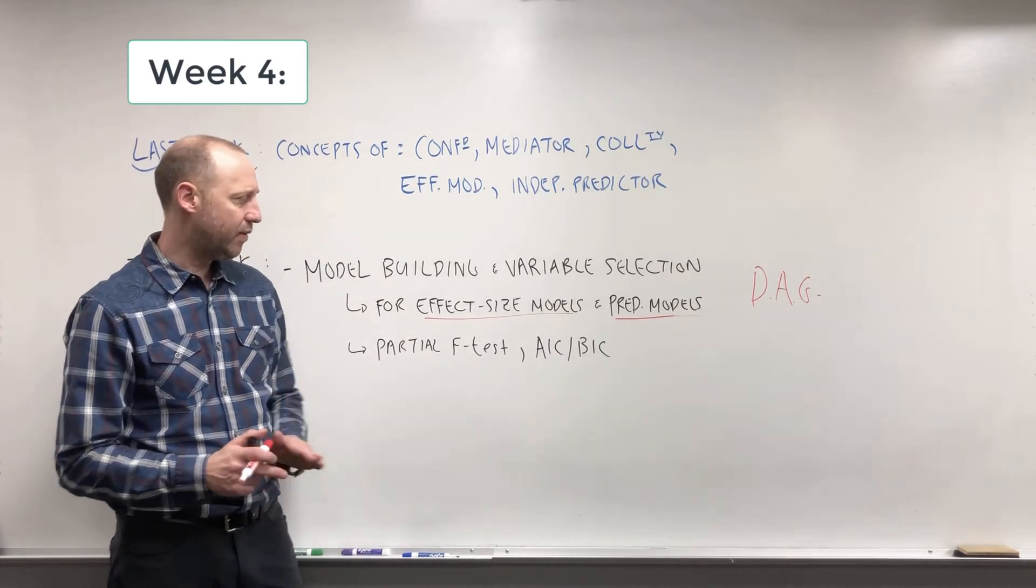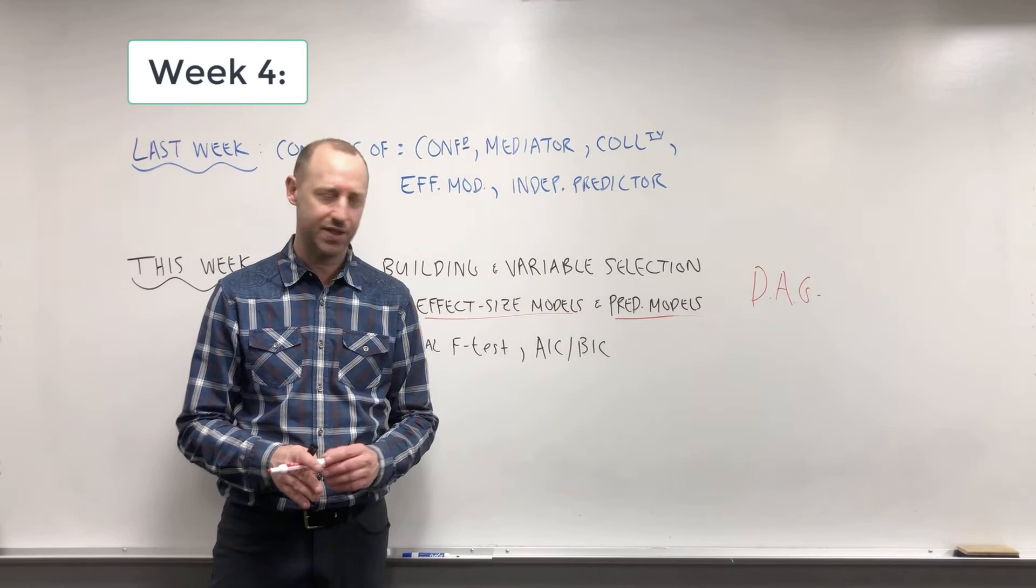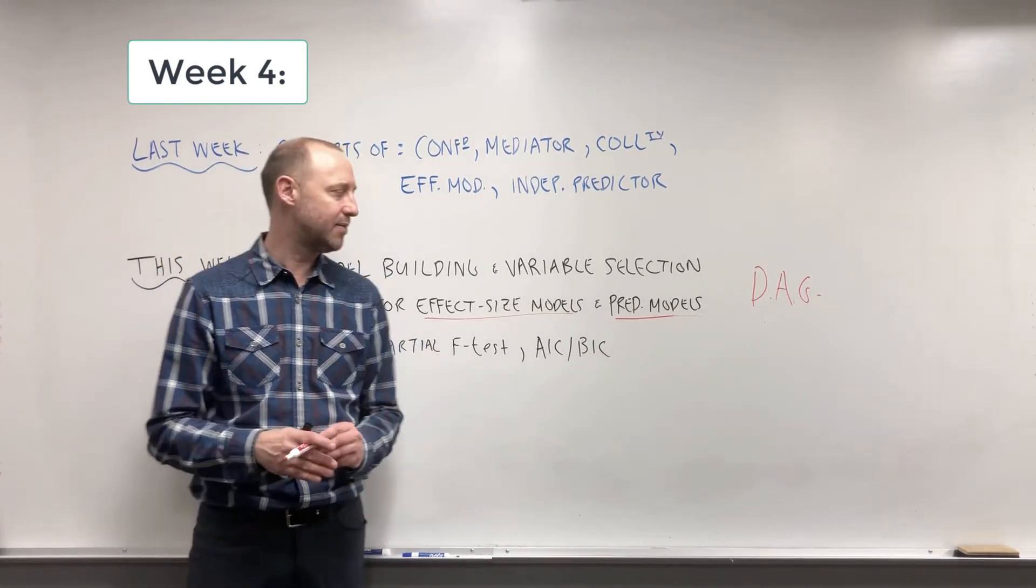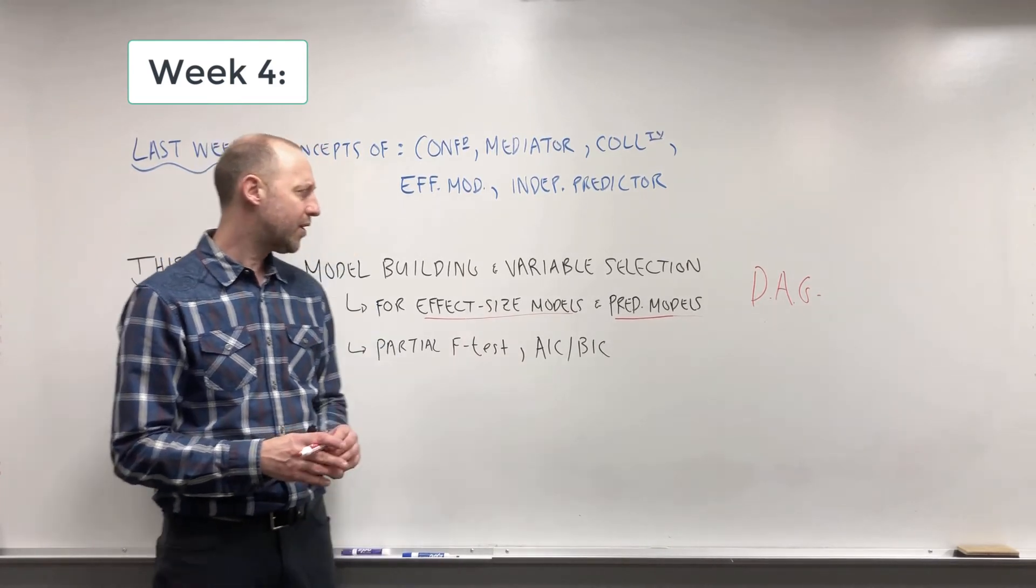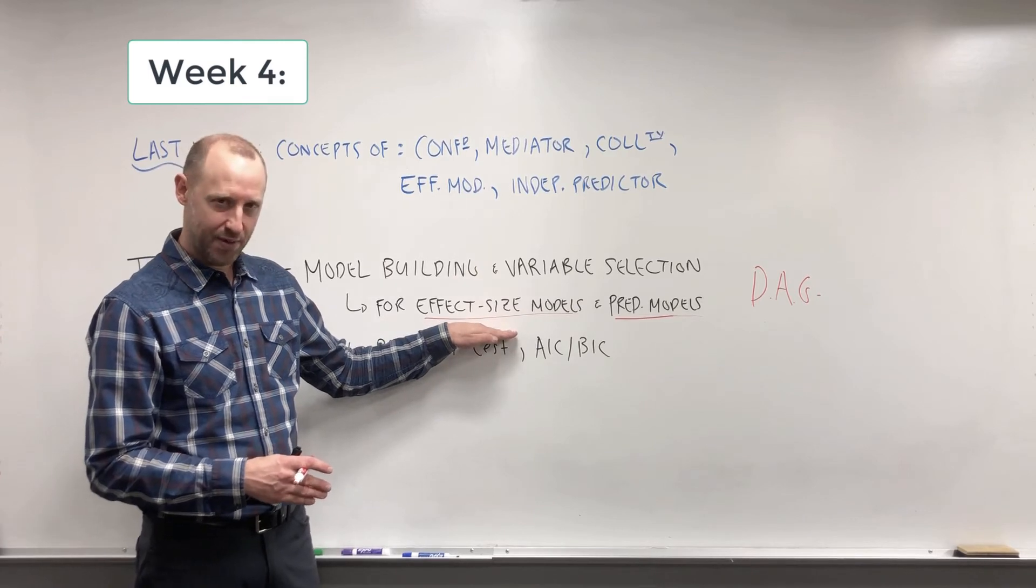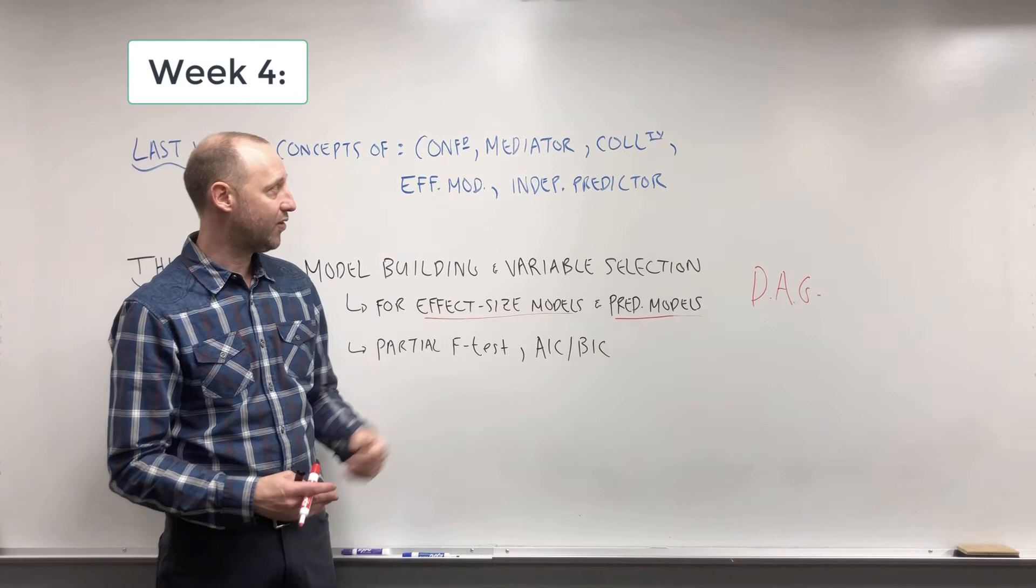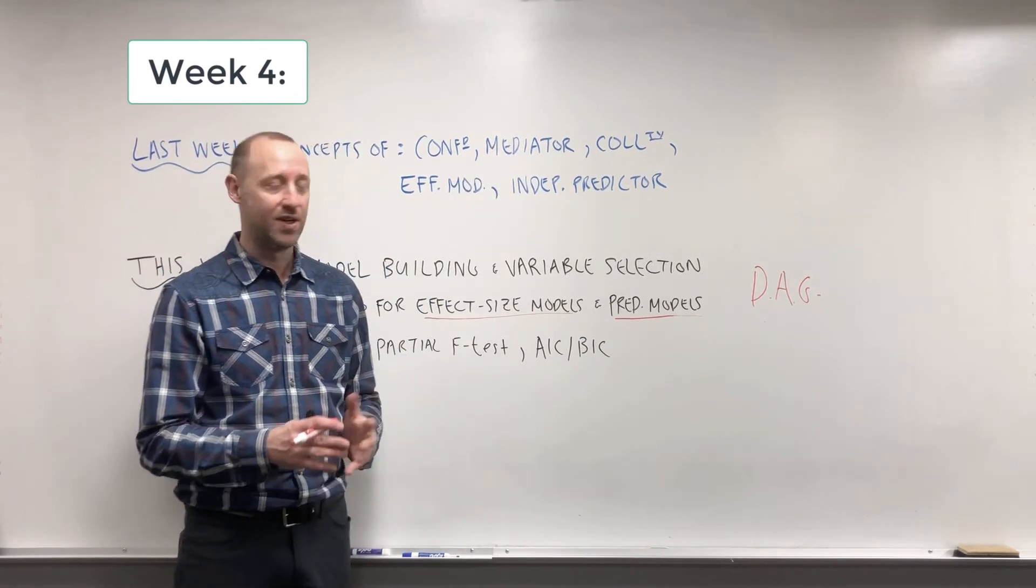We will—I haven't written it down here—we will make a brief mention of automated variable selection procedures, like forward selection or backward selection, stepwise selection. We won't talk too much about these ideas, and part of the reason is they don't really work at all for effect size models. There, we want to think about these concepts: what is a confounder, are there mediators, and decide to include or exclude variables based on those criteria.